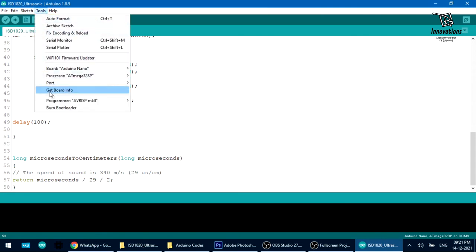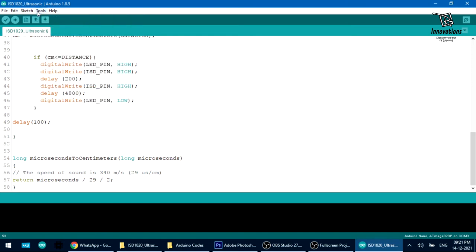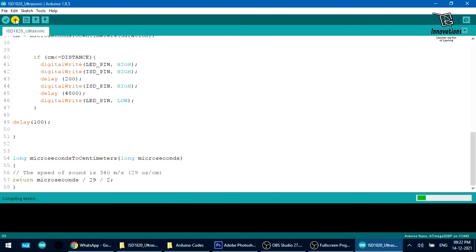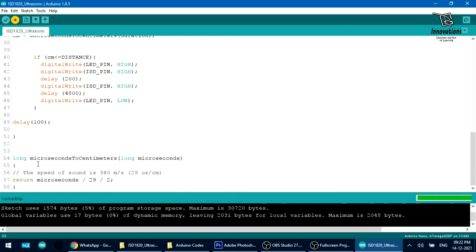Now we will upload the sketch. First we have to check whether the board is selected. We have to select COM 3. Now board is selected, Arduino Nano. Now we will upload the sketch. The sketch is being compiled, compiling, uploading the sketch, and it is done uploading.